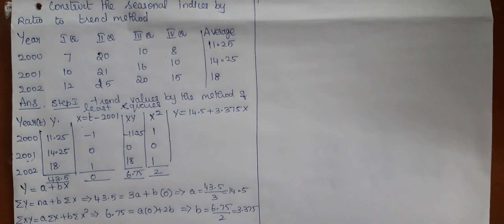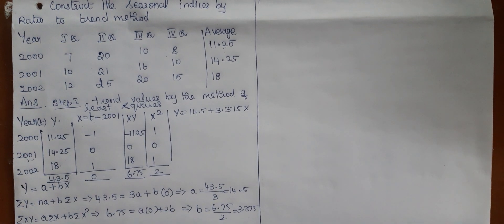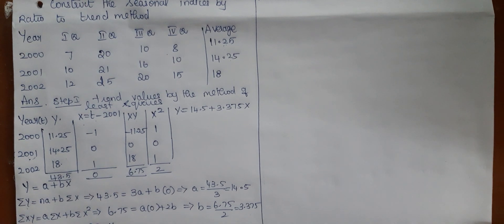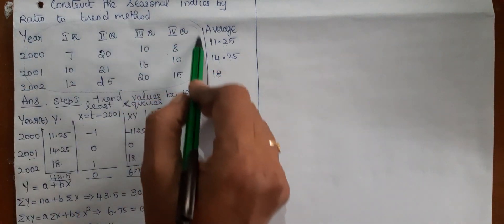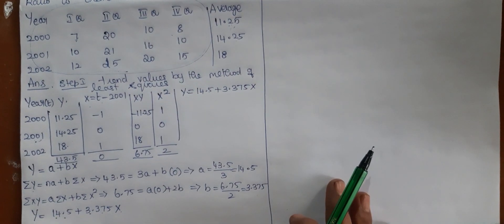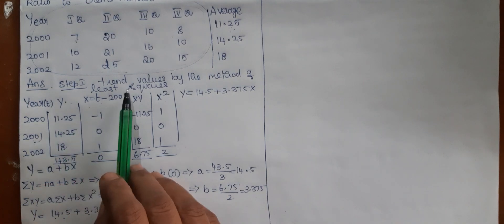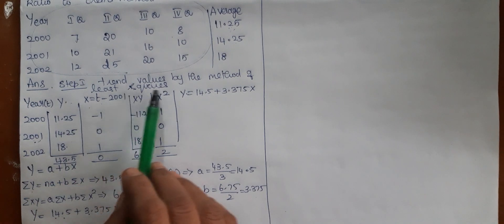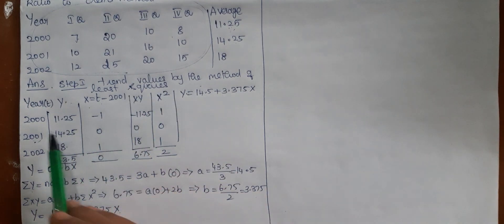In this video we are going to discuss the method of constructing seasonal indices using the ratio-to-trend method. This is the data given, and the quarterly data is given in the problem. For each year you calculate the average — this is the first step. Then in the first table you are going to compute the trend values by the method of least squares.